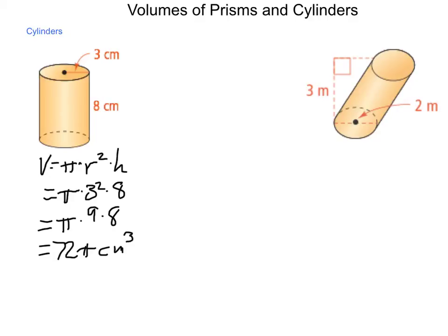Just as a side note, a cubic centimeter by volume is equivalent to one milliliter. So seventy-two pi cubic centimeters or cc's would also be seventy-two pi milliliters.